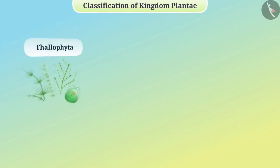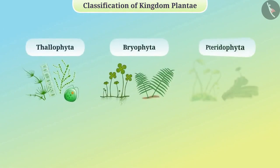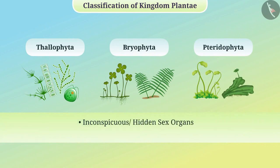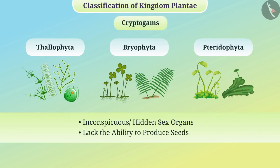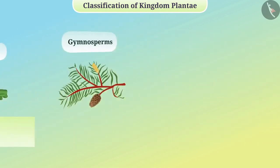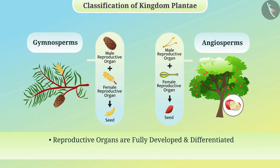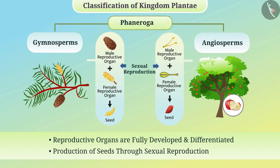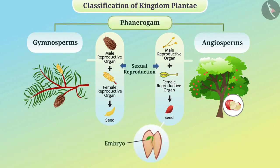Among them, thallophyta, bryophyta and pteridophyta — the plants in these three groups have very inconspicuous or hidden sex organs and they lack the ability to produce seeds, so they are called cryptogams. But in gymnosperms and angiosperms, the reproductive organs are fully developed and differentiated. They produce seeds through sexual reproduction, hence these groups are called phanerogams. The seeds consist of an embryo along with stored food. When the embryo develops into a new organism, it gets nutrition from the stored food.